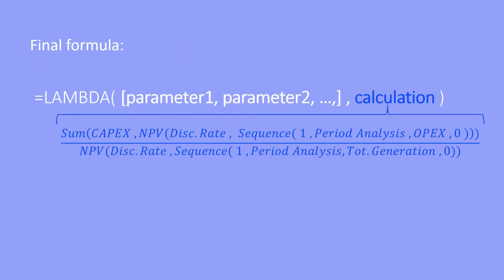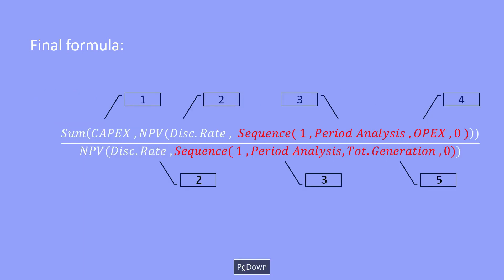Bringing everything together, we have the final formula that needs to go as the calculation argument in the Lambda function. By checking the arguments of the calculation, you can see all five variables listed. Now that I've gone through all the steps needed to have the Lambda function calculate the LCOE, let's jump into the Excel file.